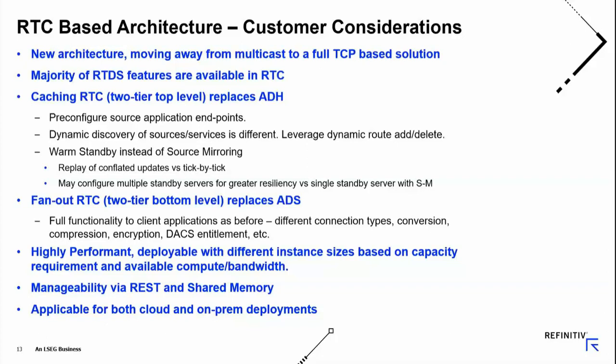We have performance numbers addressing how performant RTC is compared to multicast. With multicast you publish once and there are multiple subscribers, whereas in the TCP world you send the message multiple times. We have published fanout numbers available for review. Manageability is the same — you can use the REST interface. If you are on-prem and want to use shared memory on the same node while running RTC, that continues to be available. This architecture can be deployed in cloud or on-prem.